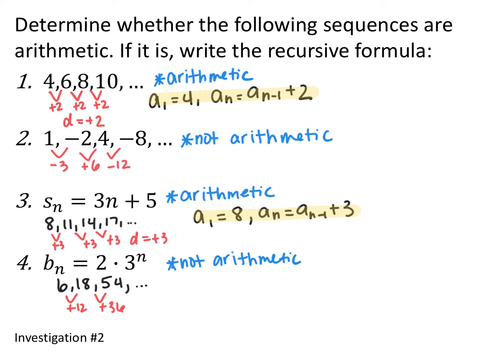The recursive formula for the first sequence: a sub 1 equals 4, and a sub n equals a sub n minus 1 plus 2. For the next one, to go from 1 to negative 2 you subtract 3, to go from negative 2 to 4 you add 6, then subtract 12 to get to negative 8 — since we're not adding the same thing every single time, this is not arithmetic.